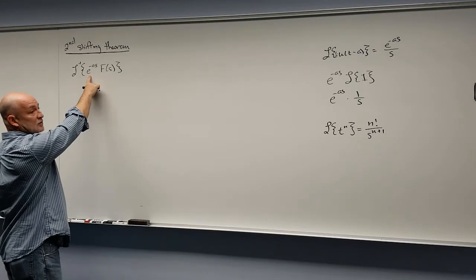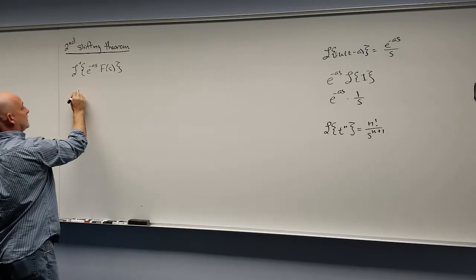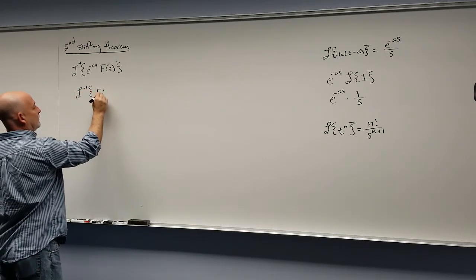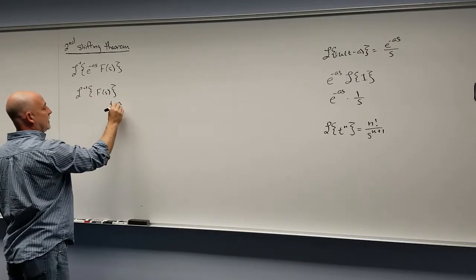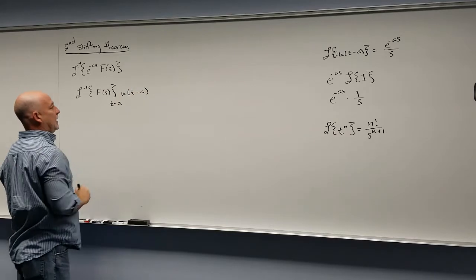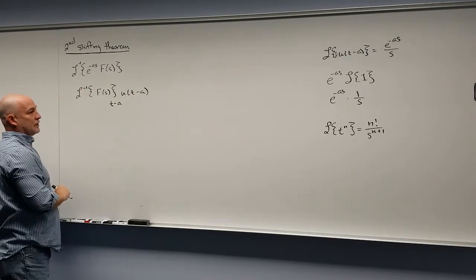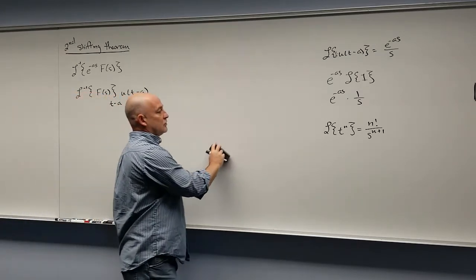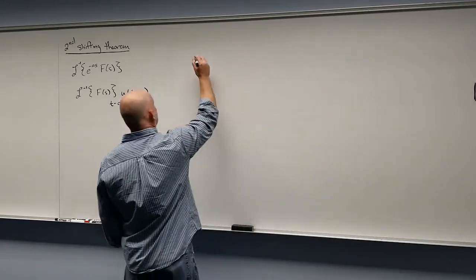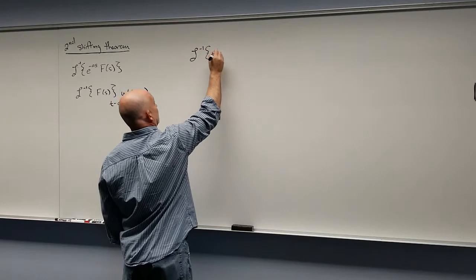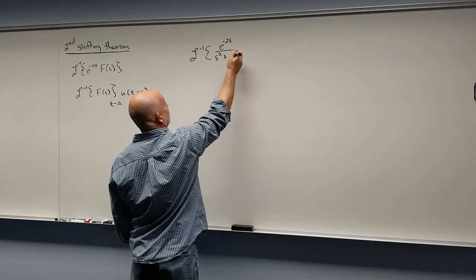Since we're multiplying by an exponential in the s-world, we know we're going to take the inverse Laplace transform of f(s), but then shift all our t's to t minus a and multiply by the unit step u(t-a). So this exponential gives us a shift and a unit step function with the same shift. Let's find the inverse Laplace transform of e^(-2s)/(s²+16).